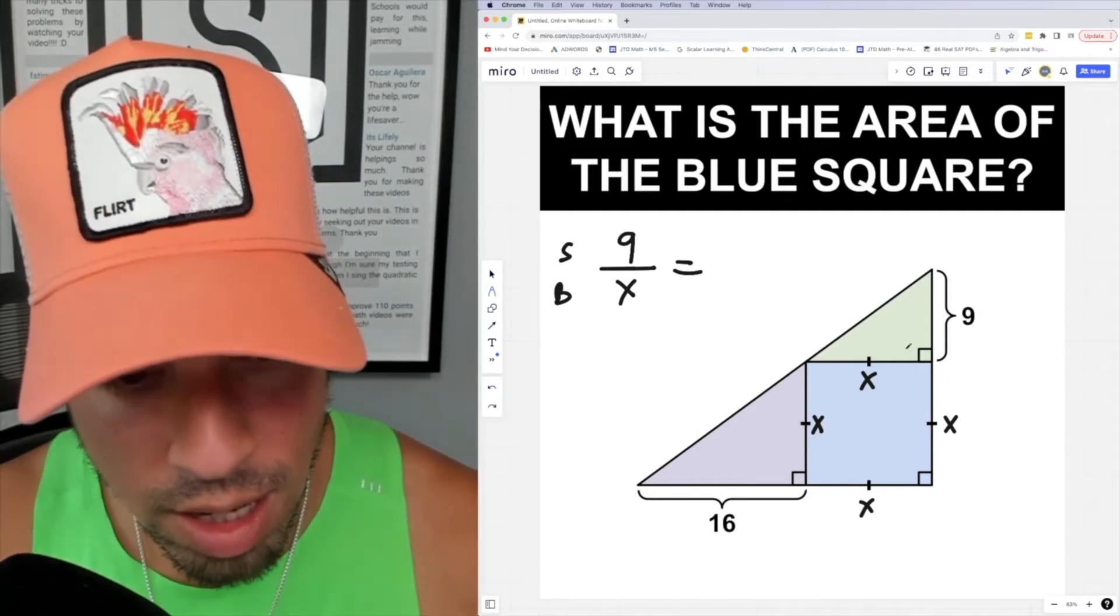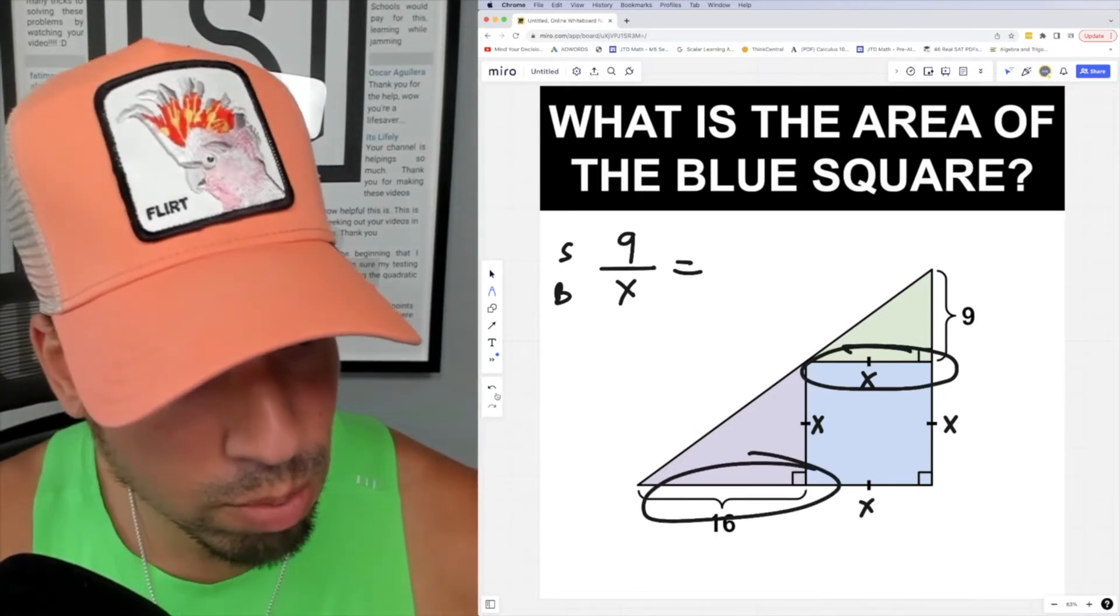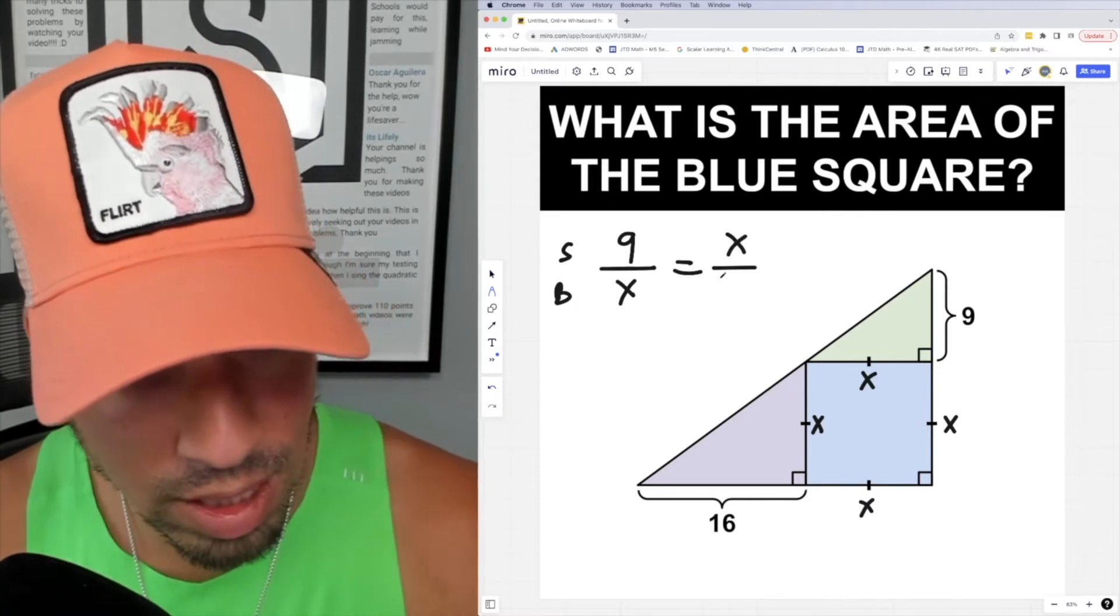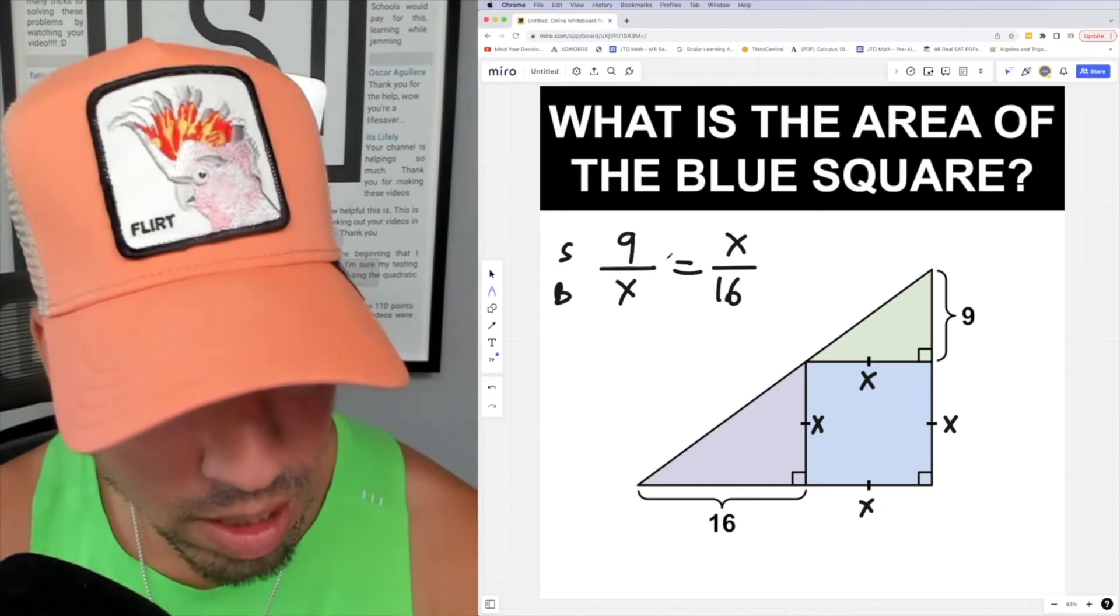...the ratio of proportionate sides of the green triangle to the purple triangle, aka x over 16. Now I got this nice proportion and I can solve by cross multiplication.